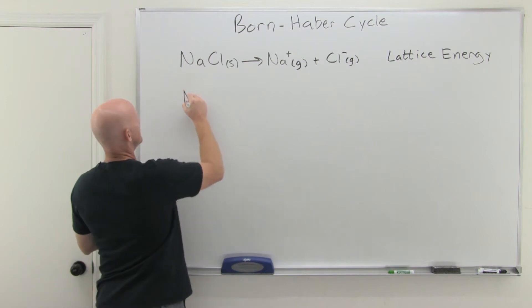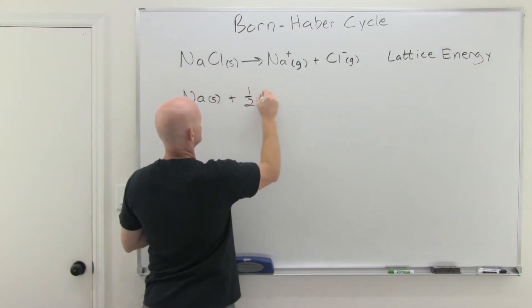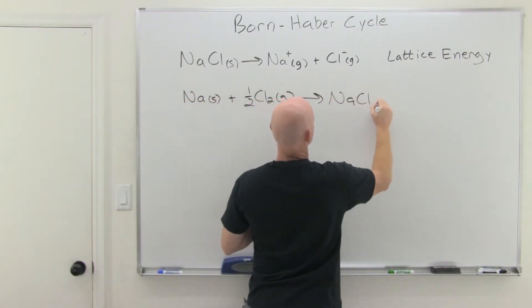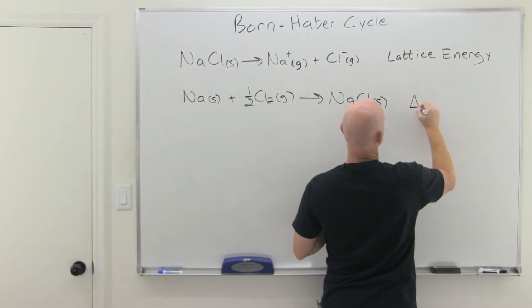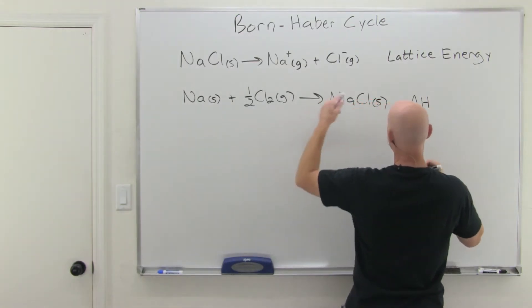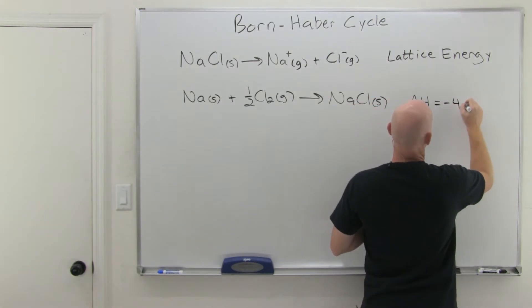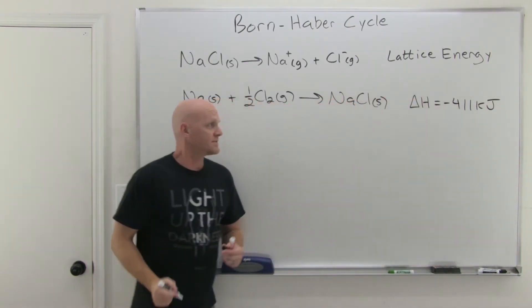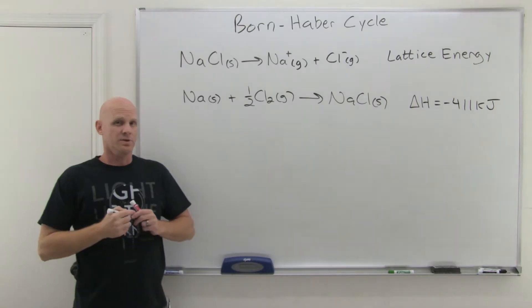The key to this is that we actually can measure, if we combine sodium solid and chlorine gas, we can make solid sodium chloride, and we know the delta H for this. It turns out we can just combine these in the lab and actually directly measure delta H with a bomb calorimeter. So that delta H is negative 411 kilojoules.